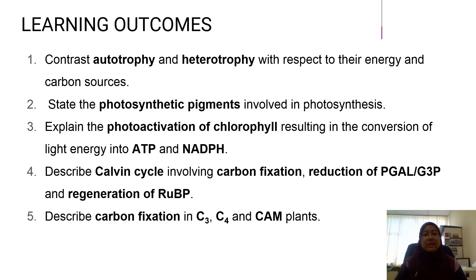These are the learning outcomes. First, contrast autotrophy and heterotrophy with respect to their energy and carbon sources. Second, state the photosynthetic pigments involved in photosynthesis. Third, explain the photoactivation of chlorophyll resulting in the conversion of light energy into ATP and NADPH. Fourth, describe the Calvin cycle involving carbon fixation, reduction of PGAL or G3P, and regeneration of RuBP. Fifth, describe carbon fixation in C3, C4 and CAM plants.